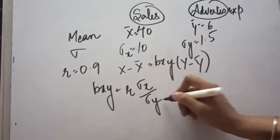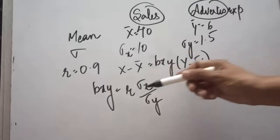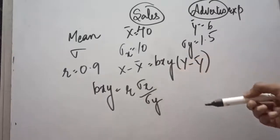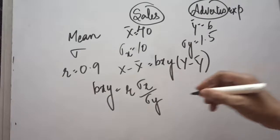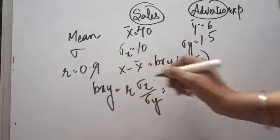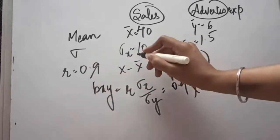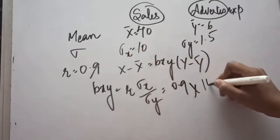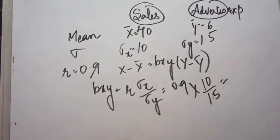As mentioned earlier in the formula video, when correlation and standard deviations have been given, we can use the formula bxy = r × (SD_x / SD_y). So, filling in the values: correlation is 0.9, standard deviation of x is 10, standard deviation of y is 1.5. So, 0.9 × 10 ÷ 1.5 comes out to be 6.